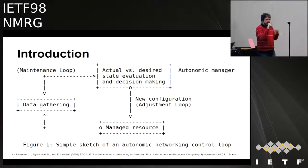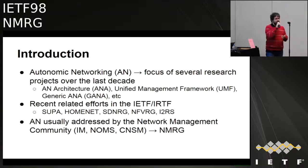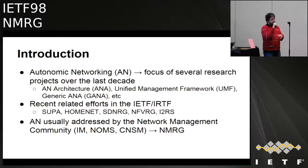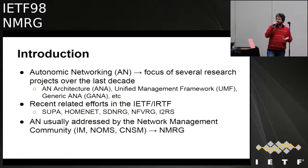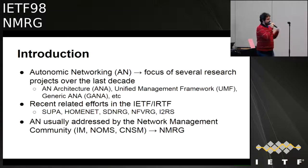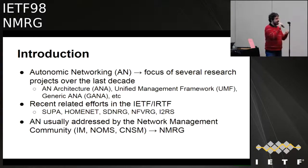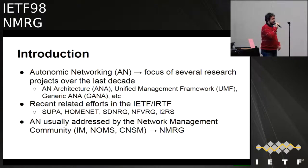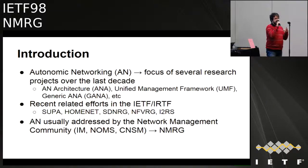Autonomic Networking has been the subject of several research projects and investigations over the last decade — for example, UMF, GANA, and others. Considering work in the IETF, there are efforts in SUPA, HomeNet, SDNRG, NFVRG, and I2RS. Autonomic Networking investigations are usually addressed by the network management community, with works published in IEEE IM, NOMS, and CNSM. From a network management perspective, Autonomic Networking is definitely a subject of interest.